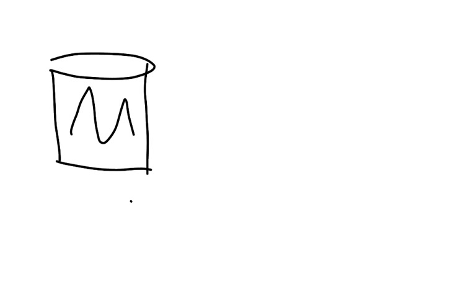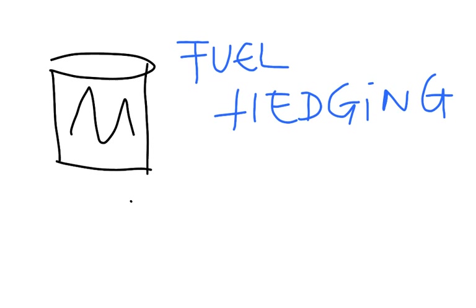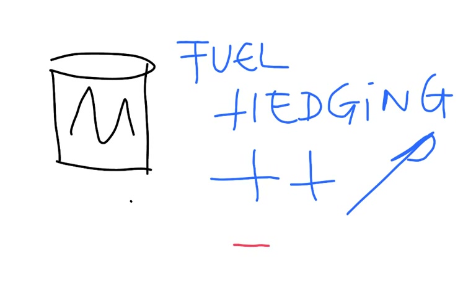To try to minimize these fluctuations, airlines do something called fuel hedging. What fuel hedging does is essentially secure a certain level of fuel prices for the future. For example, in September an airline might try to fix fuel prices for the following year. It has a positive effect when prices go up, but it can also have a negative effect when prices go down, as in the current situation. Fuel hedging has saved a lot of money for airlines, but recently it could actually create an extra cost. So it is something to be done very carefully.